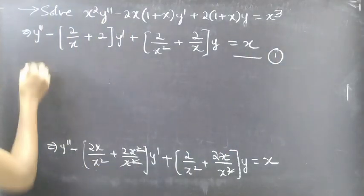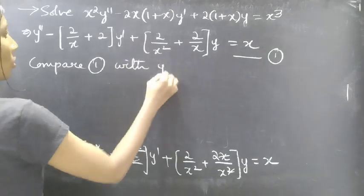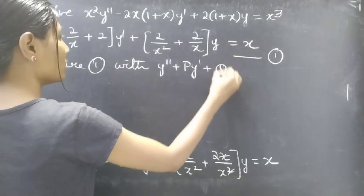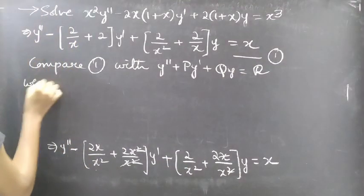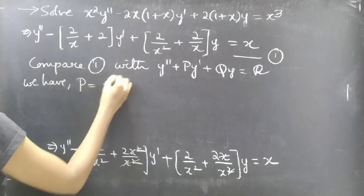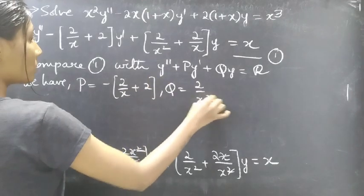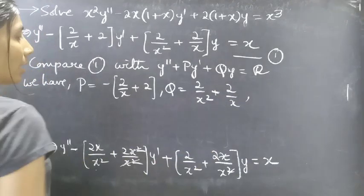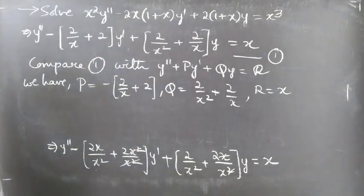Now compare this equation with the standard form y double dash plus P y dash plus Q y equal to R. We get: P equal to minus (2 over x plus 2), Q equal to 2 over x squared plus 2 over x, and R equal to x. Now we need to find the complementary function, that is a part of the solution of equation 1. We need to observe P and Q to choose a suitable formula.